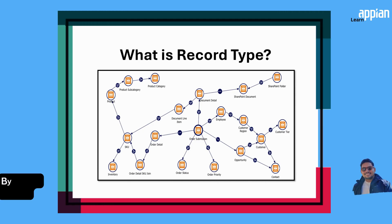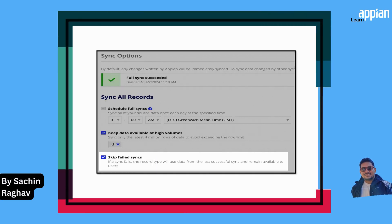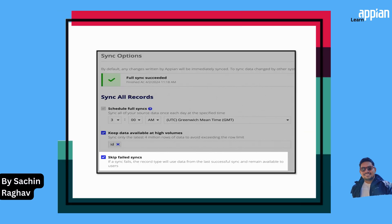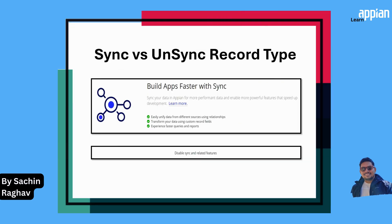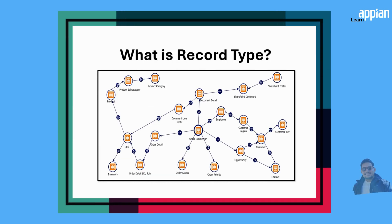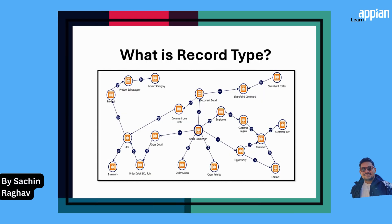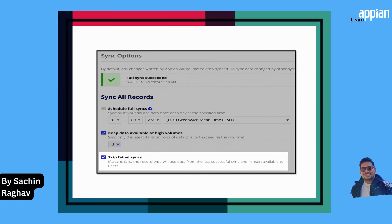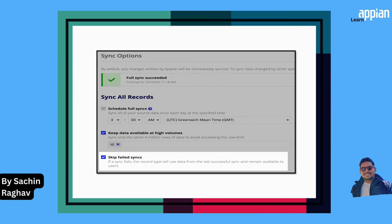First things first, what is a record type in Appian? Simply put, record types are the backbone of your business data in Appian. They represent key entities like customers or orders, making your data organized and actionable. Record types in Appian can pull data from a variety of sources — databases, Salesforce, web services, and even process models. This versatility ensures you have the data you need, where you need it.